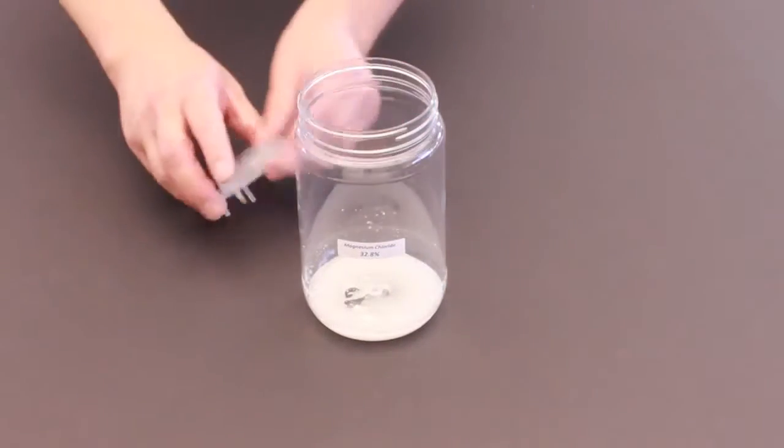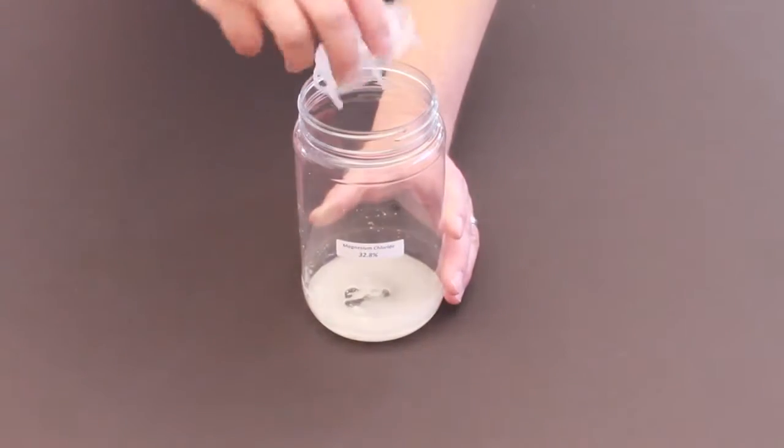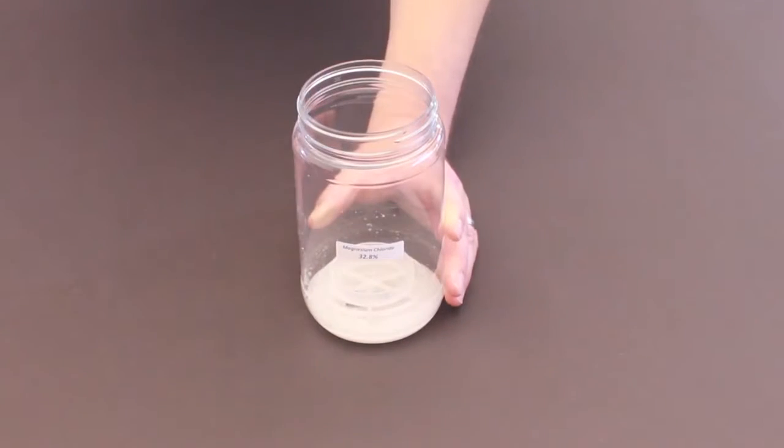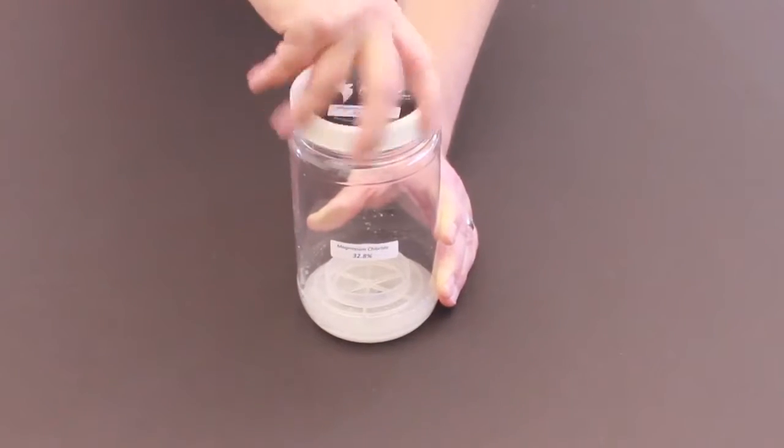Once we are done, we will take the other grid spacer and put it in with the prongs to the bottom. Take our lid and close it up tightly.